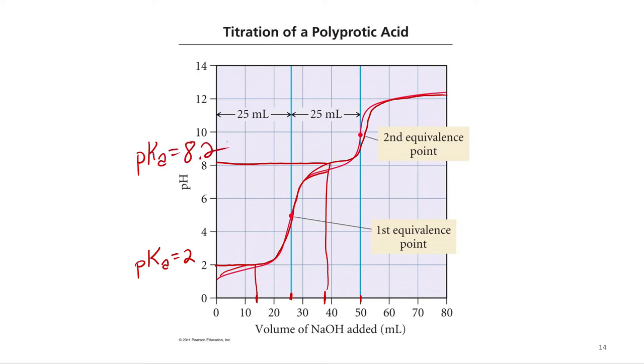So you can find the Ka's for both acidic protons in one titration. I bet you're really sad that you didn't do a diprotic acid when you determined a Ka. That would have been more fun, twice as much fun. Two Ka's, one titration.